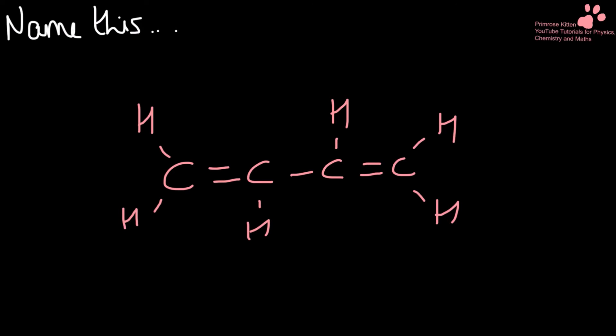Name this. Four carbons again — one, two, three, four — so this is buta-1,3-diene.